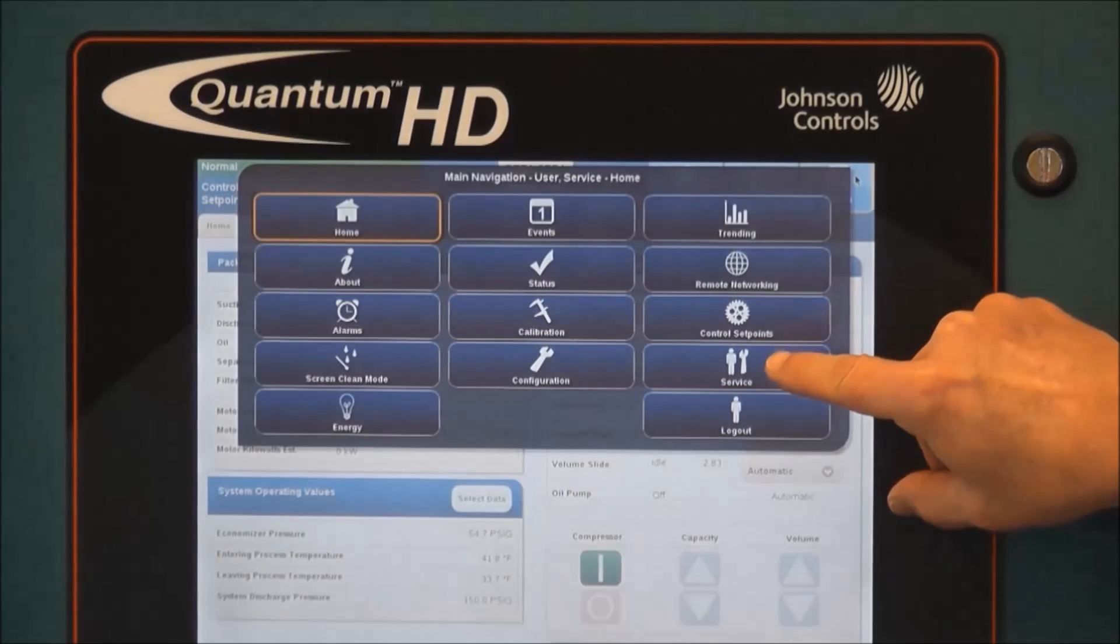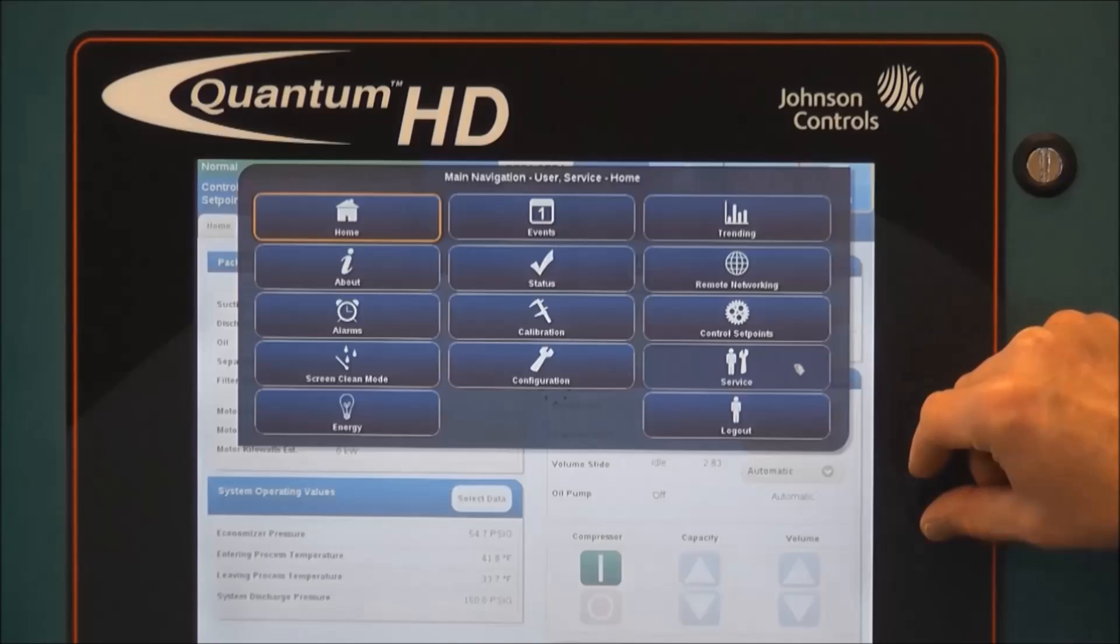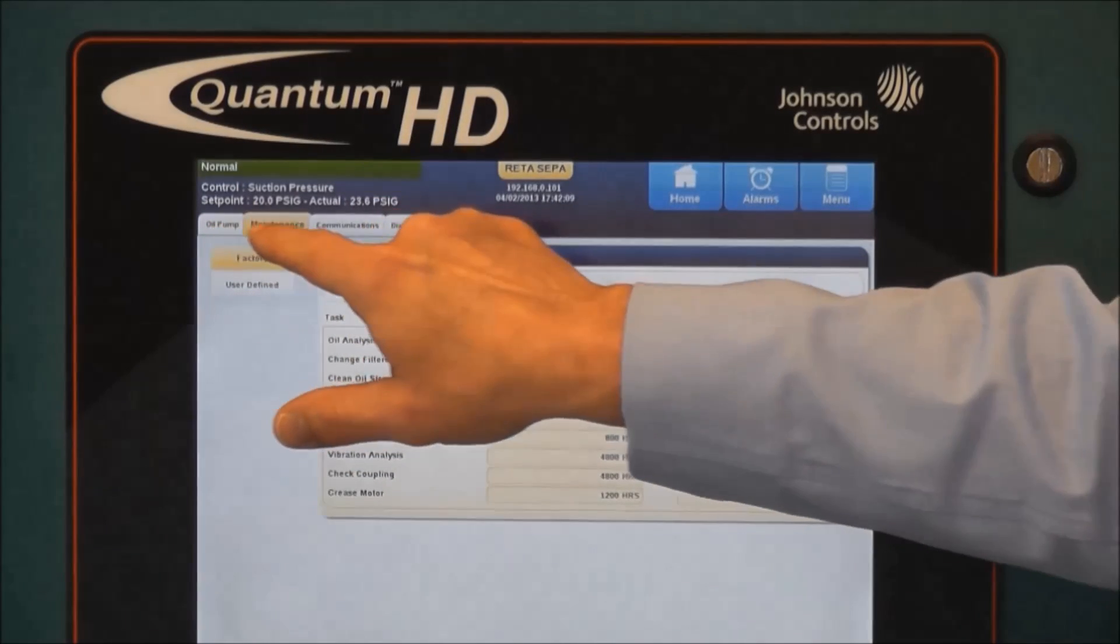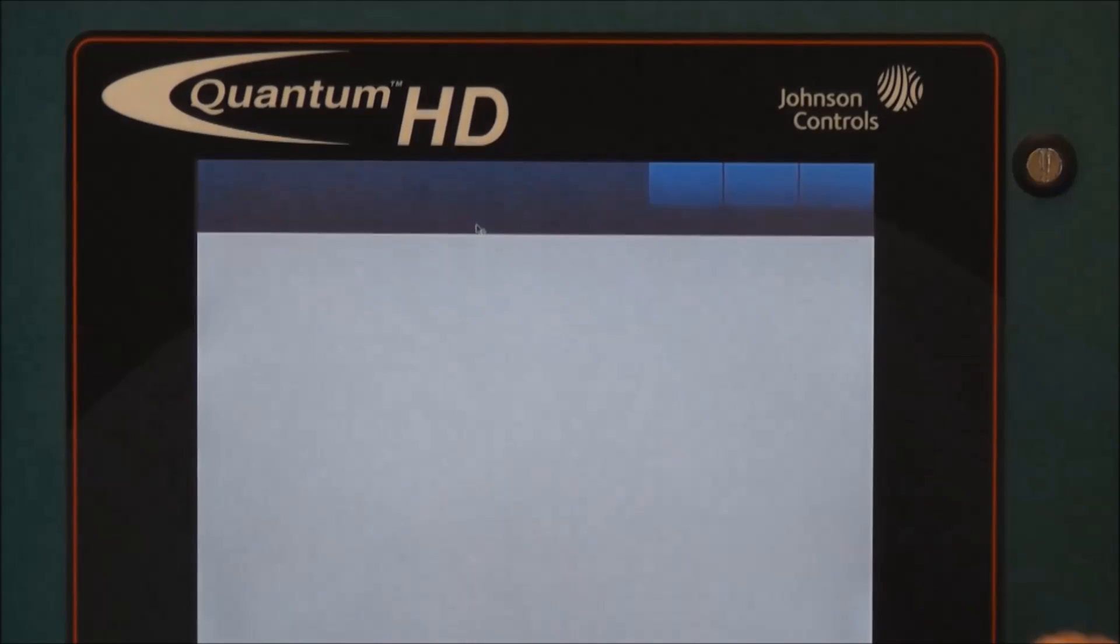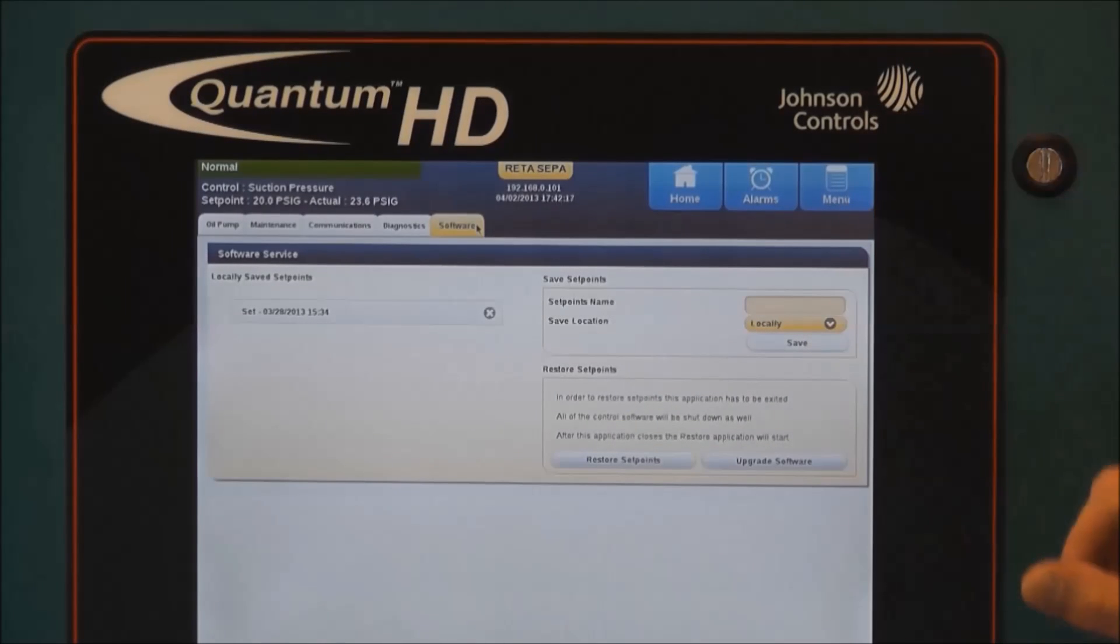So if we touch menu and then select the service icon on the menu screen, you'll see several file tabs will appear across the service page. We want to select software and that brings us to the software save and restore page.